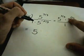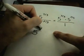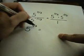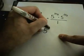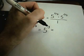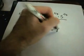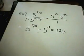7 thirds plus 2 thirds, remember I have like bases, I add the exponents. That's 9 thirds. Well, 9 divided by 3 is 3. And recall that 5 cubed is just 5 times 5, which is 25. And 25 times 5, which is 125.